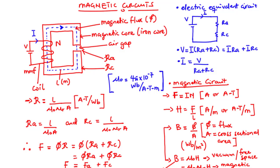Within the magnetic circuit we have two resistances — the resistance of the air gap as well as the resistance of the iron core. In a magnetic circuit, we call this resistance the reluctance. So R_A is the reluctance of the air gap and R_C is the reluctance of the iron core. The iron has a high magnetic permeability, meaning it has a high ability to set up magnetic flux within itself, and hence has a very low reluctance compared to the air gap, which has a high reluctance and a low magnetic permeability.